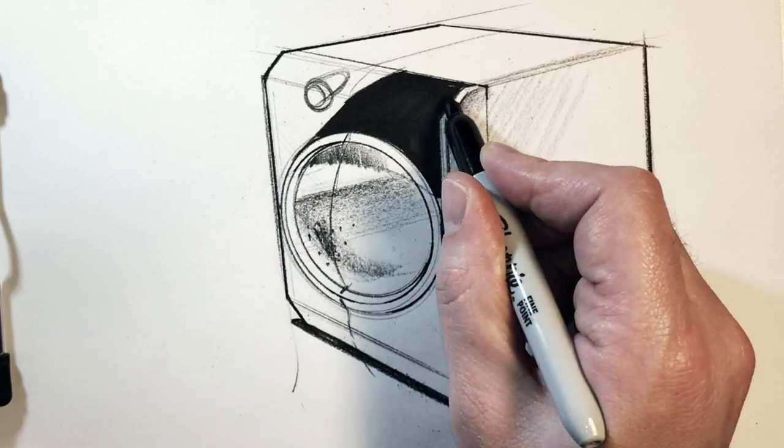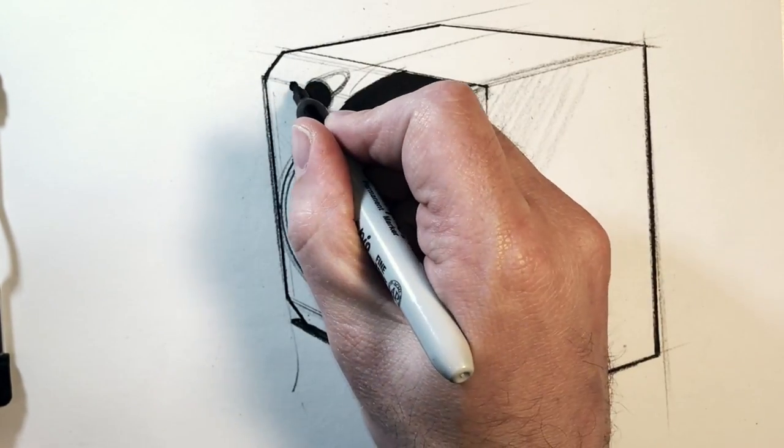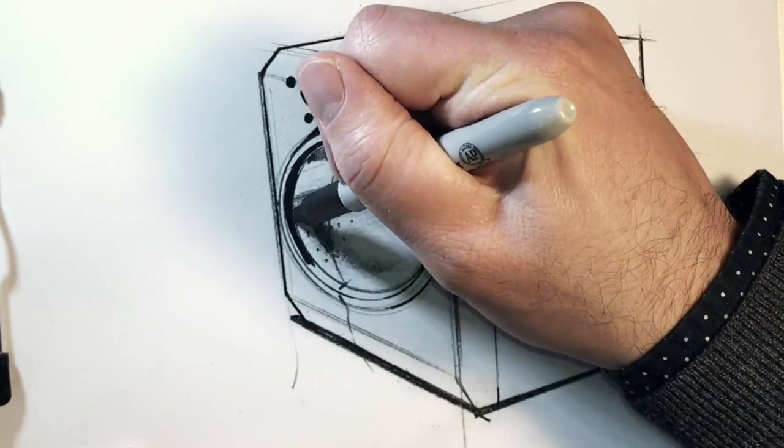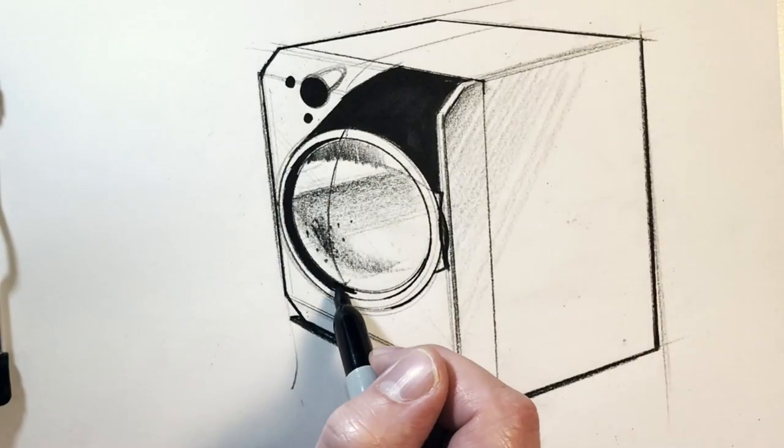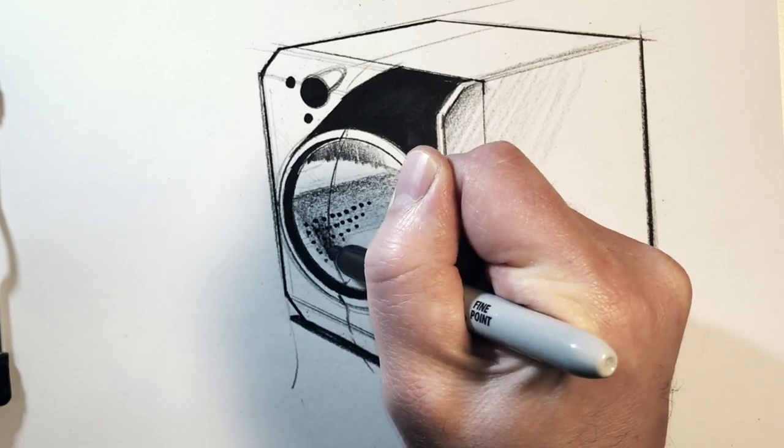I'm just blacking that in with my sharpie. Let's get the control knob, the same thing. Maybe there's a couple other little controls, and then let's black in this inner ring of this door bezel here. It's some kind of a gasket or seal that goes around the glass. Pop the perforations inside the drum as well.